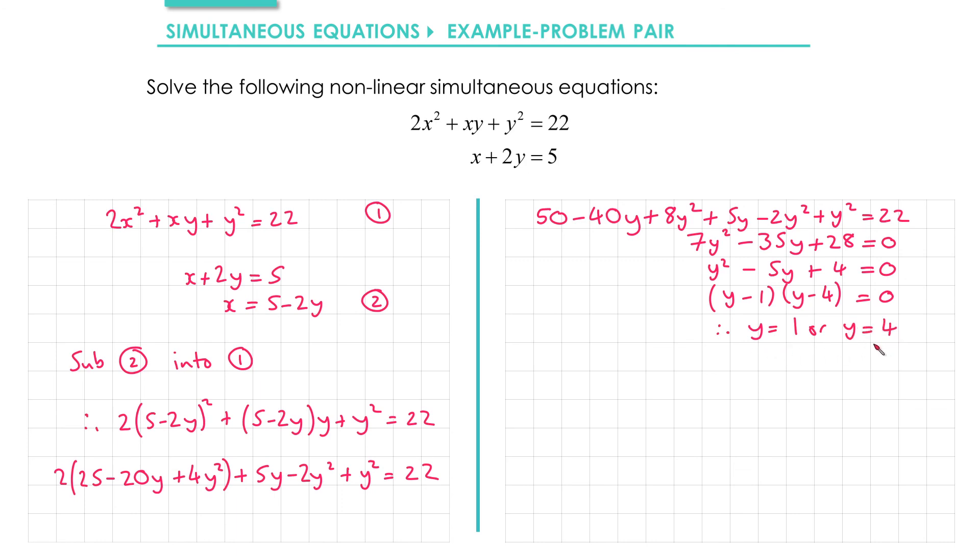Then we need to take our y values and find out the corresponding x values. I'm going to sub them into equation 2. That gives me x = 5 - 2 times 1, which gives me 3. Then I'm going to sub y = 4 into equation 2. That gives me x = 5 - 2 times 4, which is negative 3.